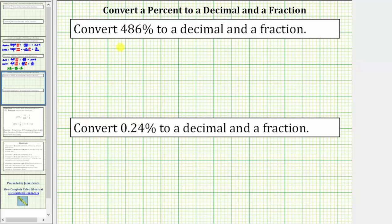Going back to our first example, we're asked to convert 486% to a decimal and a fraction. We will begin by writing 486% as a fraction with a denominator of 100. 486% equals 486 over 100, or 486 hundredths.